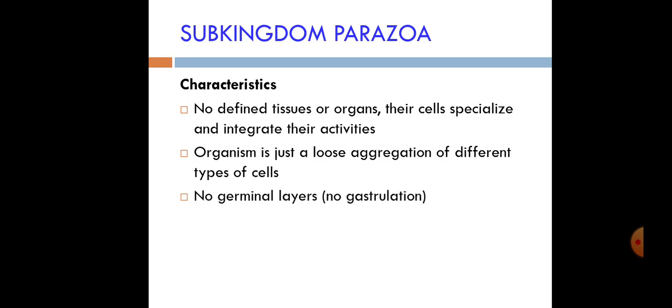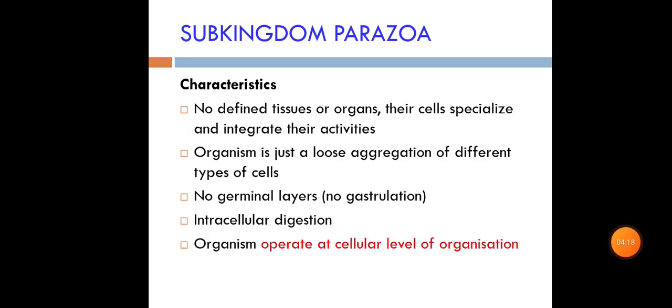Now let's look at the characteristics of Parazoa. They don't have defined tissues and organs. Their cells can specialize and integrate their activities, but Parazoa are at a cellular level of organization. They don't have defined tissues or organs — the organism is just a loose aggregation of different types of cells. We cannot say they have tissues; they just have cells that can specialize and integrate activities.